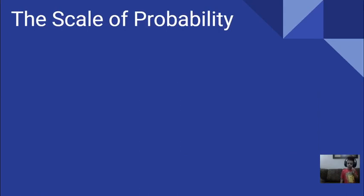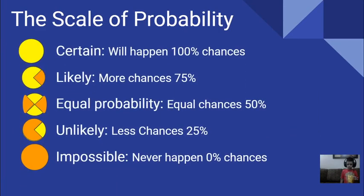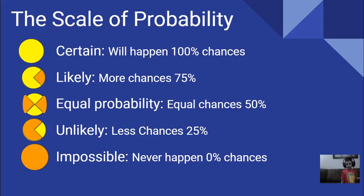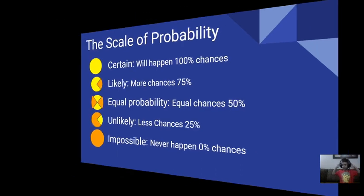Scale of Probability: certain will have 100% chances, likely more chances than 75%, equal probability equal chances at 50%, unlikely less chances than 25%, possible never happens at 10% chances.